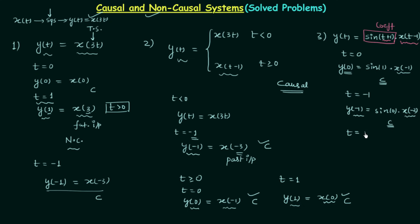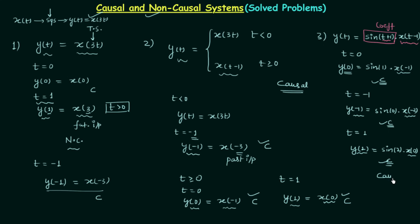Let t equal 1, a positive value: we get y(1) equal to sin(2) multiplied by x(0). Here x(0) is a past input relative to t equal to 1, so the present output is depending on the past input. Therefore we have causal nature again. In all the different cases we have causal nature, therefore the system is causal.